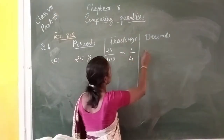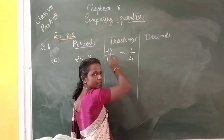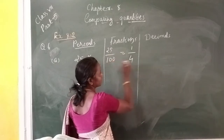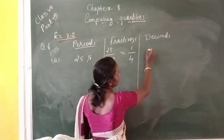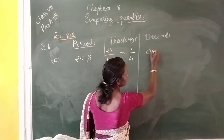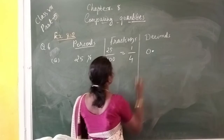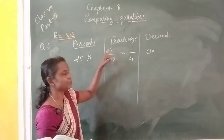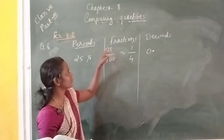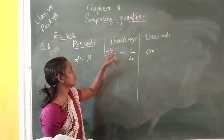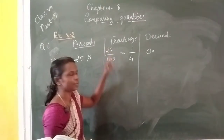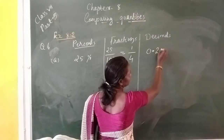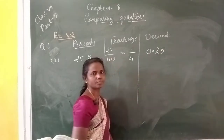Next, the decimal form. What is the decimal form? 25 by 100. To convert to decimal: the denominator has 2 zeros, so we move the decimal point 2 digits from the right side. So 25 by 100 equals 0.25.